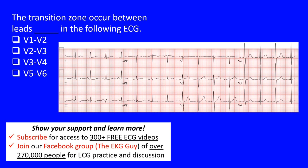Here we have a fill-in-the-blank question, and the question states the transition zone occurs between lead blank, which it can be any of these following four, and the following ECG. So we have to know which one it's occurring in.